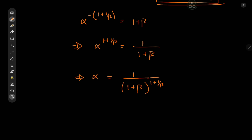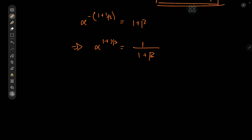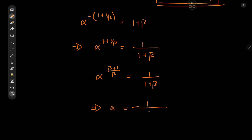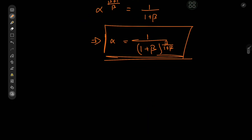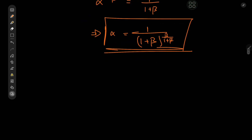Actually, that previous step needs a correction — that's in fact the cause of a re-upload. The left-hand side should be written as alpha to the beta plus 1 divided by beta equal to 1 over 1 plus beta. So that means alpha equals 1 over 1 plus beta, raised to the power beta divided by 1 plus beta. Now we can extract the values of alpha corresponding to the two values of beta.